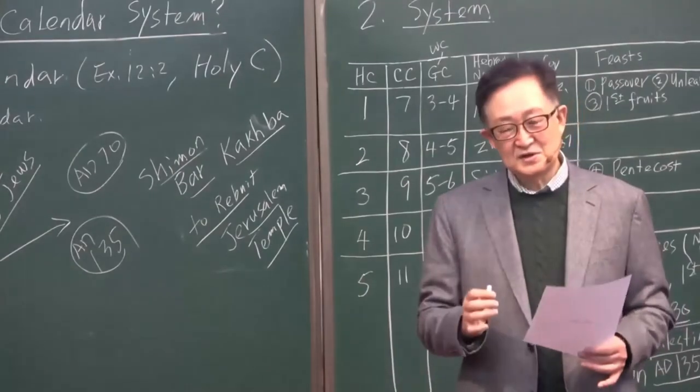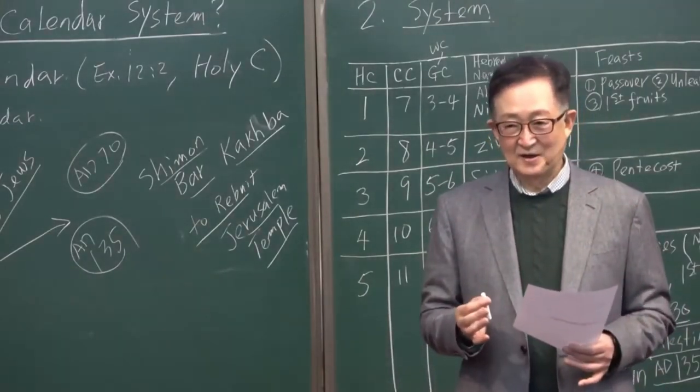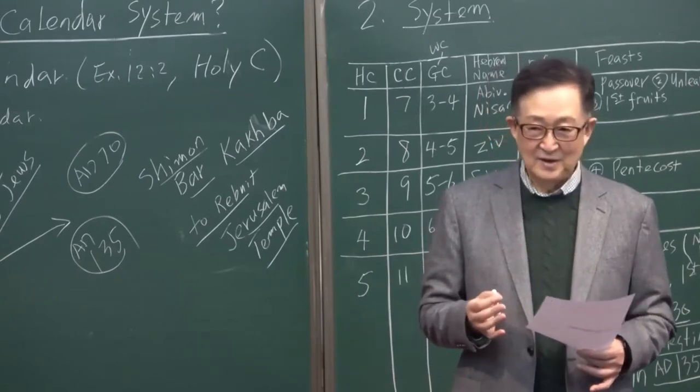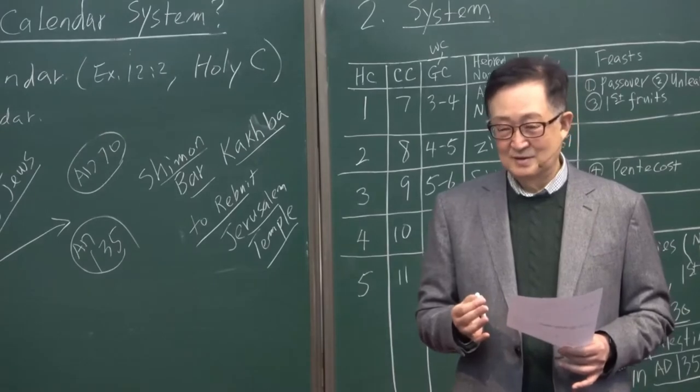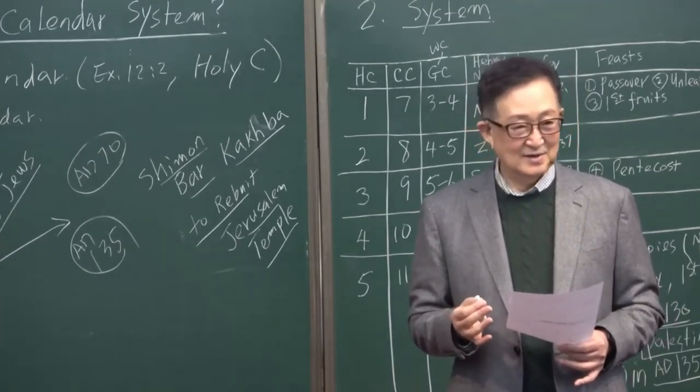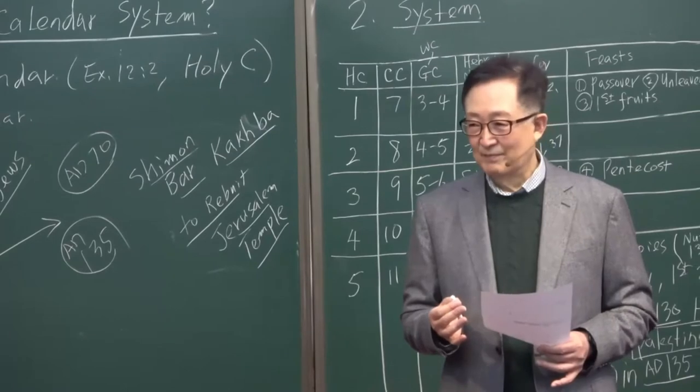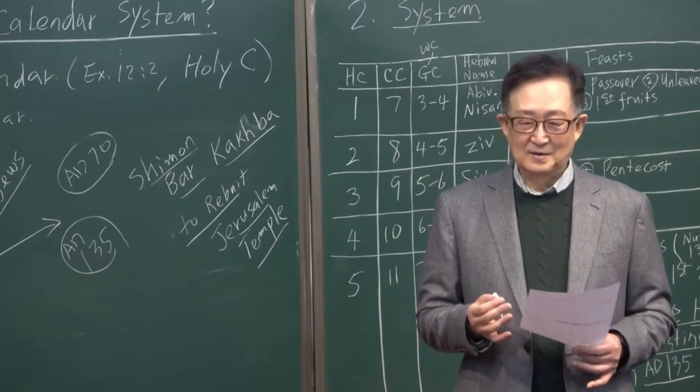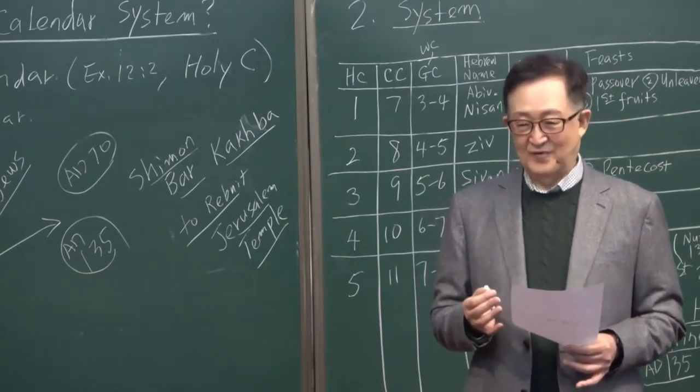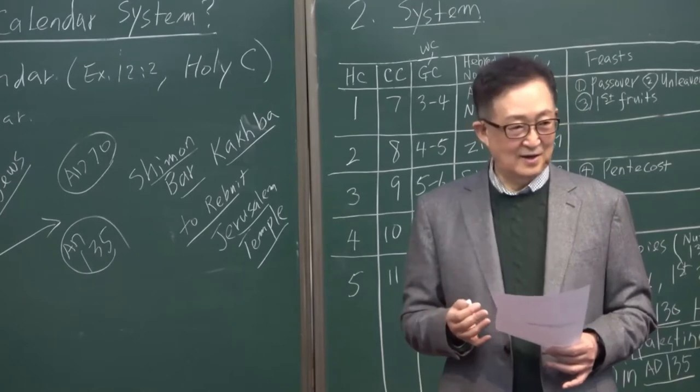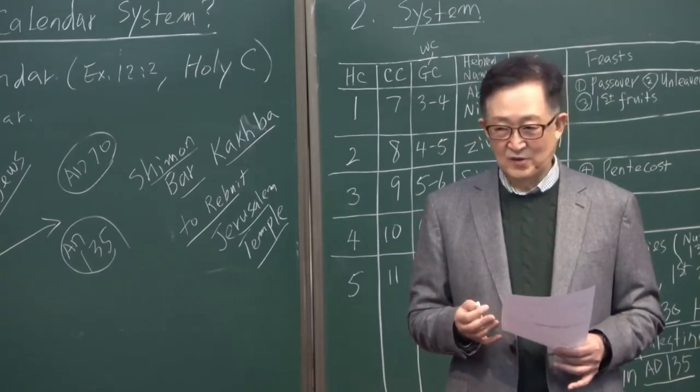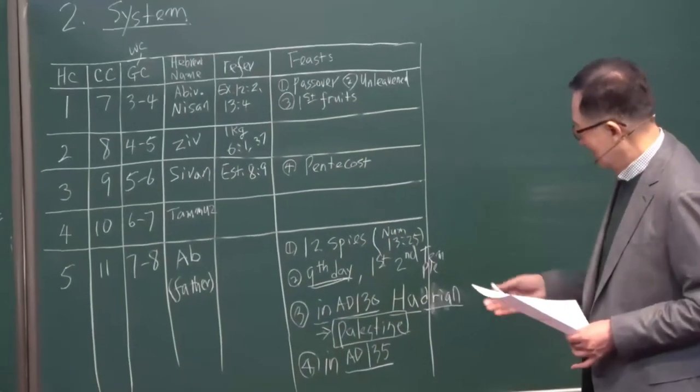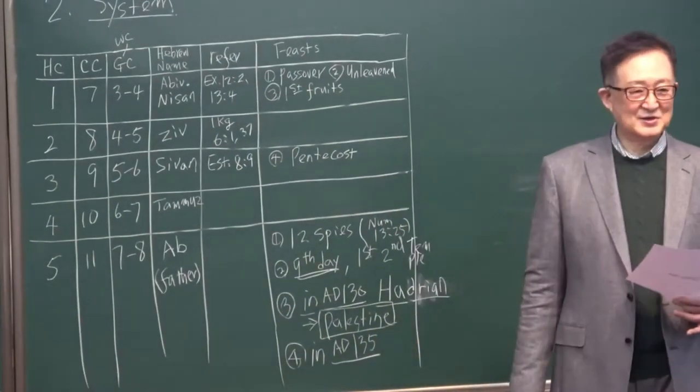Because of this, all these sad stories historically took place in what month? Ab month. As a result, the month of Ab is a very tragic month among those Israelites. How many have I given you? Four here, historical stories.